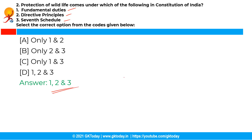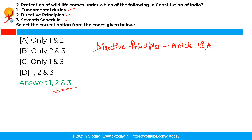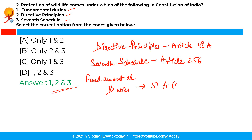Protection of wildlife was incorporated in the constitution via the 42nd Amendment by adding Article 48A, which mandates that states shall endeavor to protect and improve the environment and to safeguard the forest and wildlife of the country. The same amendment also included forest and protection of wild animals in the concurrent list under the seventh schedule. Further, protection of wildlife is also enshrined in Article 51A(g), which states it shall be the fundamental duty of every citizen to protect and improve the natural environment including forest and wildlife.